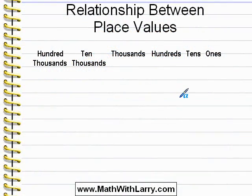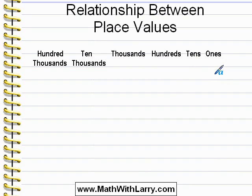This is the video for Lesson 32 on my website, Relationship Between Place Values. Let's just review what each of these place values look like. In the ones column, we have numbers — single digit numbers that look like this.